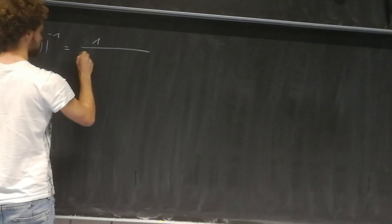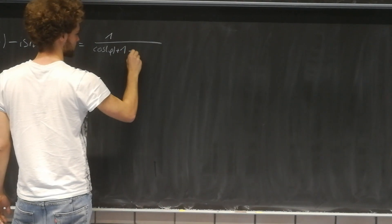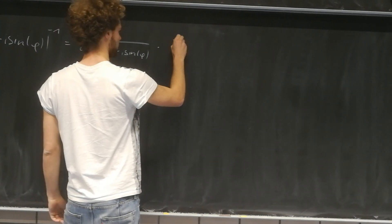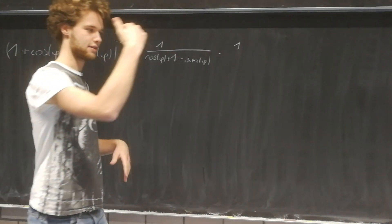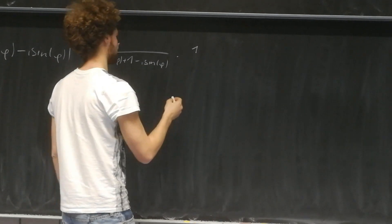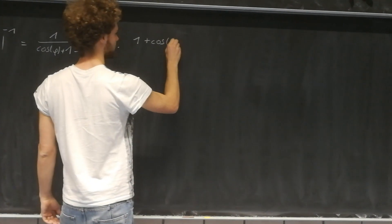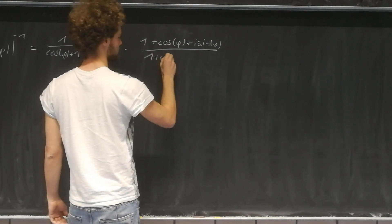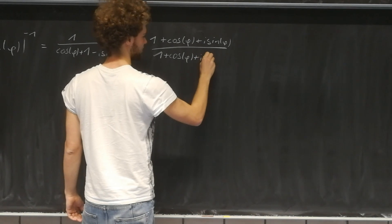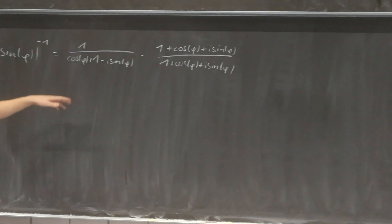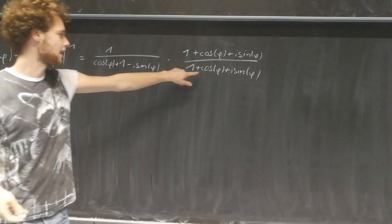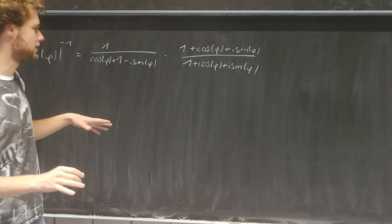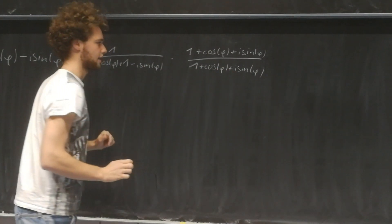So it's just 1 over cosine of phi plus 1 minus i sine of phi. And if we don't want to change this number we'll just multiply it with 1. But how can we write 1? We'll just write it as the denominator over the same denominator. So let's write 1 plus cosine of phi plus i sine of phi over 1 plus cosine of phi plus i sine of phi. And now if you pay close attention this is just a times a and minus b times b — the third binomial formula — so the middle parts cancel out nicely.